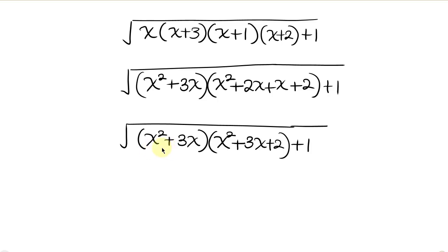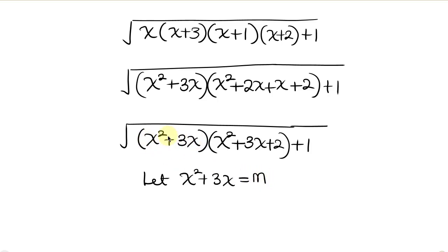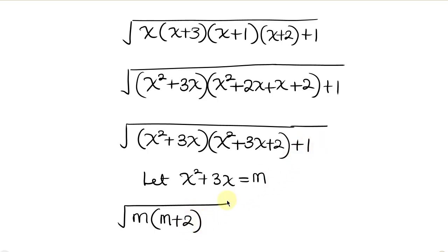Now notice that inside of this bracket I have x squared plus 3x, and inside of the other bracket I also have x squared plus 3x. So I can say let x squared plus 3x be equal to m. So this becomes the square root of m times m plus 2, and then plus 1.